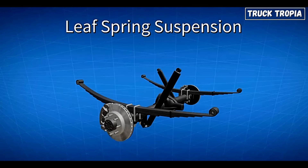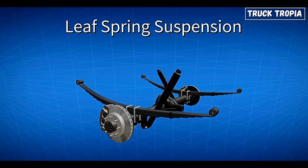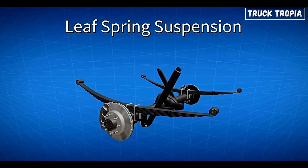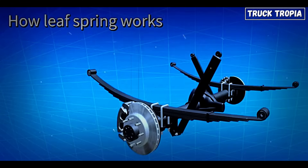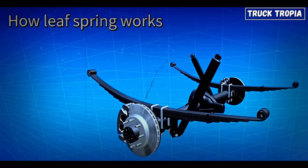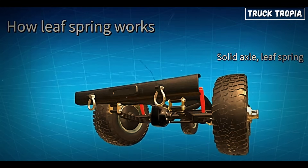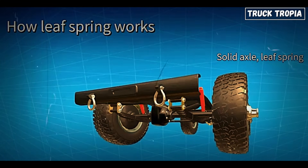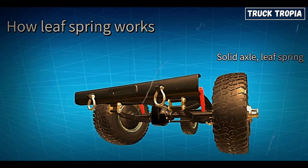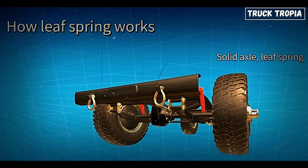Let's start with Leaf Spring Suspension, the most traditional and widely used system in heavy-duty trucks. How it works: leaf springs consist of multiple layers of metal, known as leaves, stacked on top of each other. When weight is applied, the leaves flex to absorb shock and support the vehicle's load.